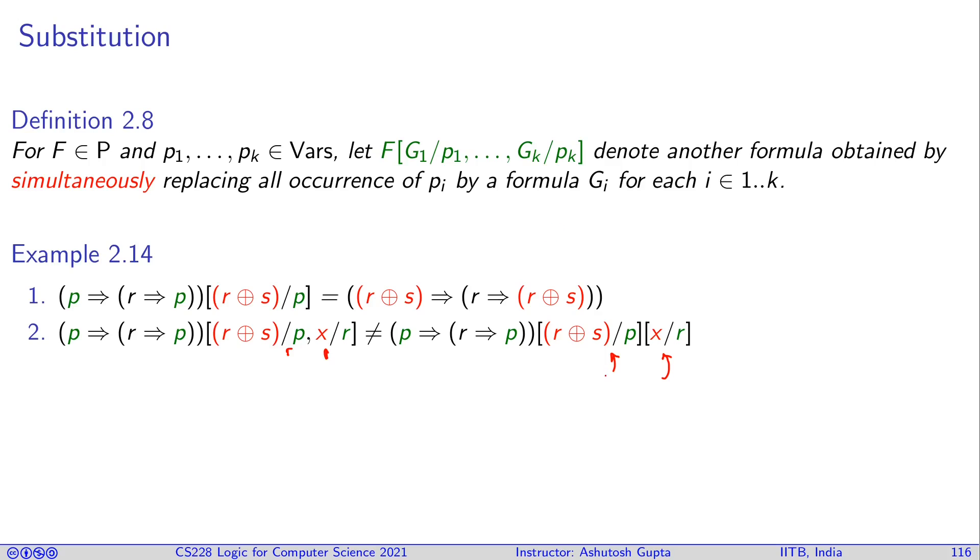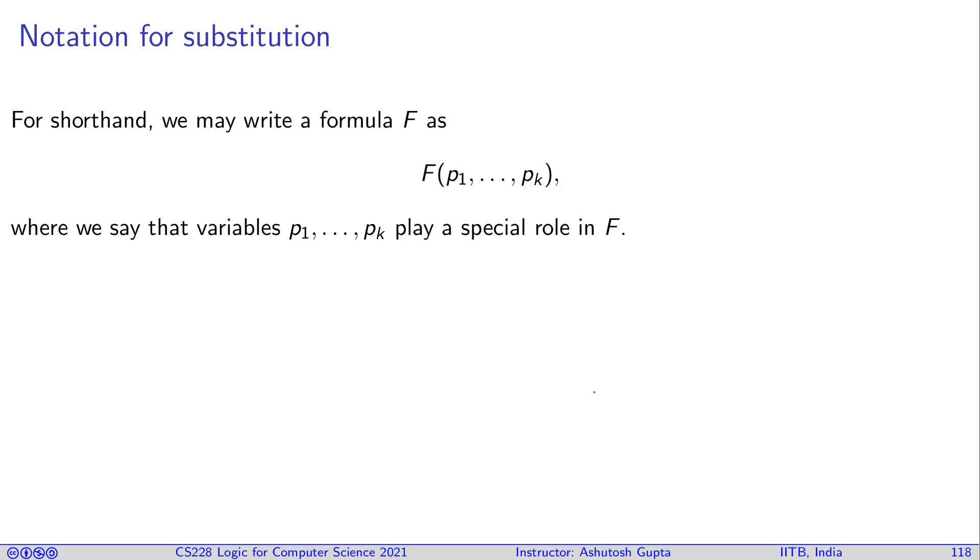Sometimes a substitution is also written down slightly differently for convenience notation. Instead of writing a formula F, we write formula F with some bunch of variables which are considered important variables in the formula. And F of G1 to Gn is this substitution. Basically, wherever P1 occurs you need to write G1, wherever Pk occurs you need to write Gk.